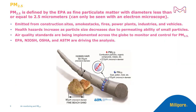So how small are PM2.5 particulates? PM2.5 is defined by the EPA as fine particulate matter with diameters less than or equal to 2.5 micrometers, which can only be seen with an electron microscope. PM2.5 is emitted from construction sites, smokestacks, fires, power plants, industries, and vehicles.